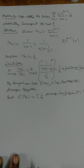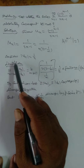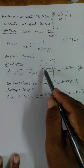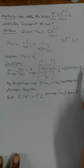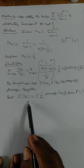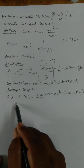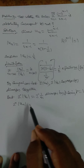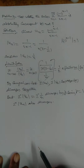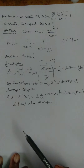For the positive term series 1/(2n−1), consider |Vₙ| = 1/n. Applying the limit comparison test: lim(n→∞) |Uₙ|/|Vₙ| = n/(2n−1) = 1/2, a finite nonzero number. By comparison test, Σ|Uₙ| and Σ|Vₙ| converge or diverge together. But Σ|Vₙ| = Σ1/n diverges by P-series with P = 1. Therefore Σ|Uₙ| also diverges.